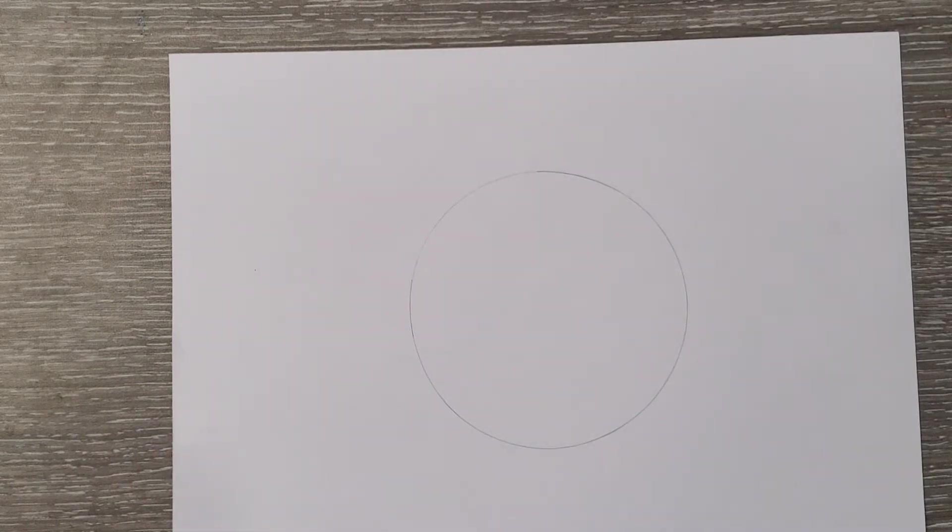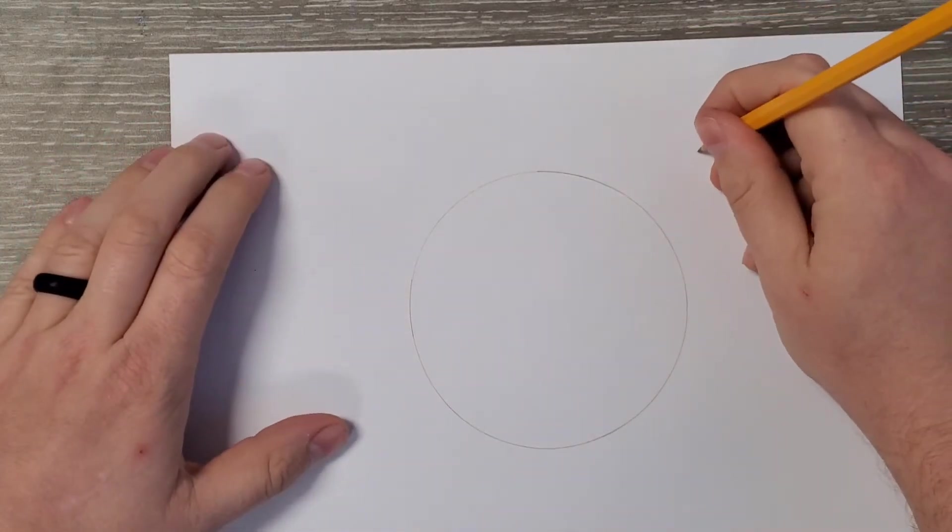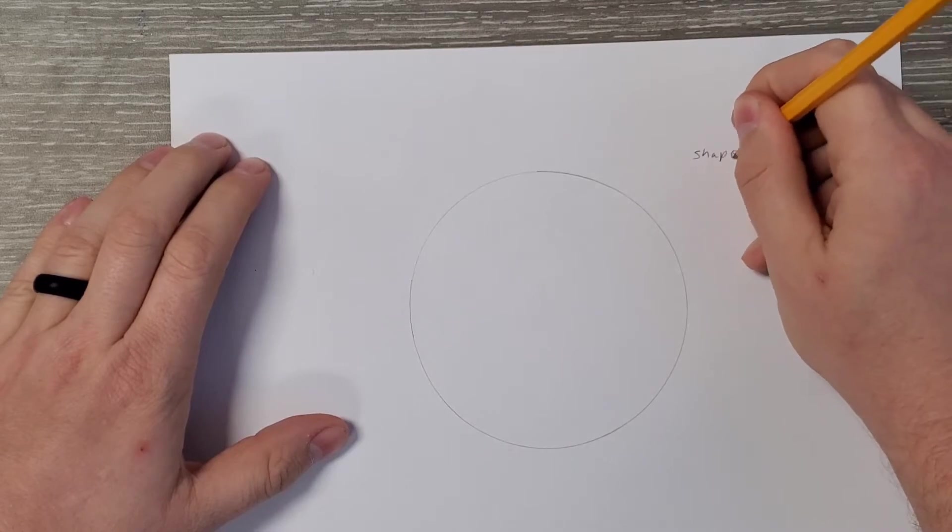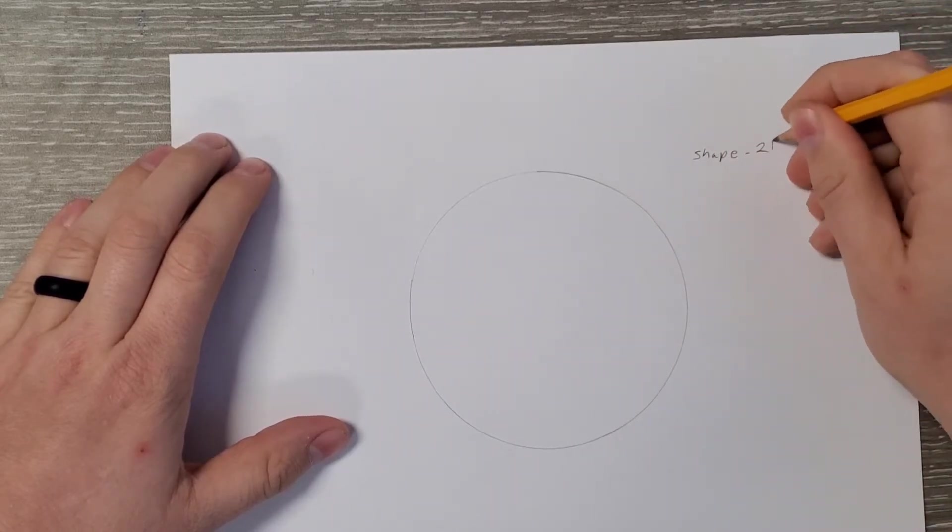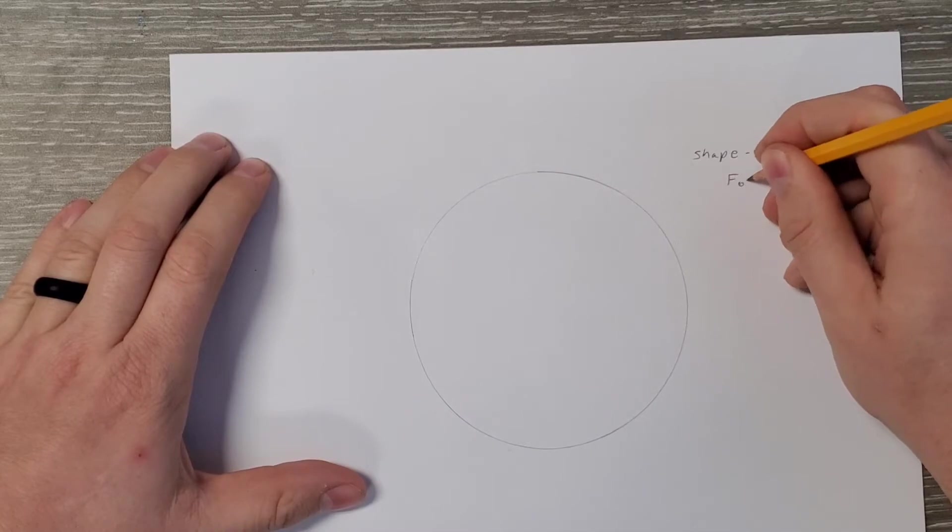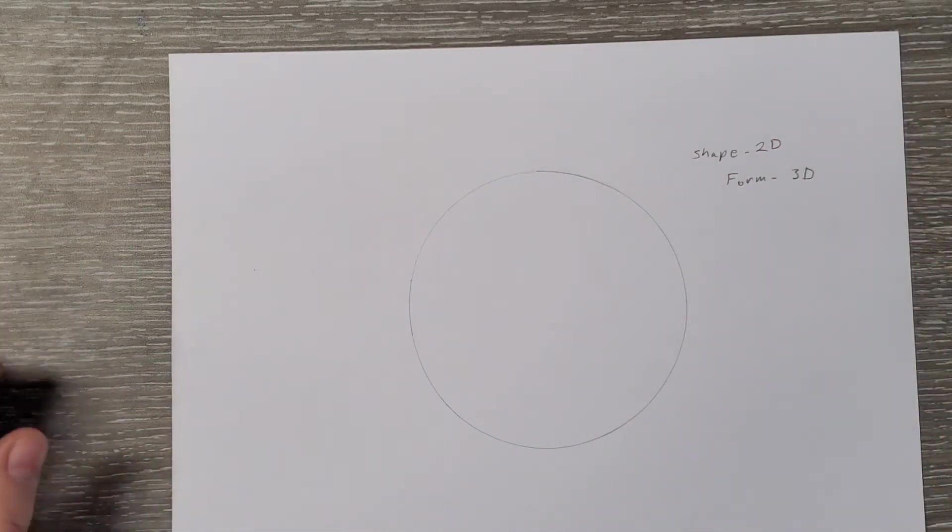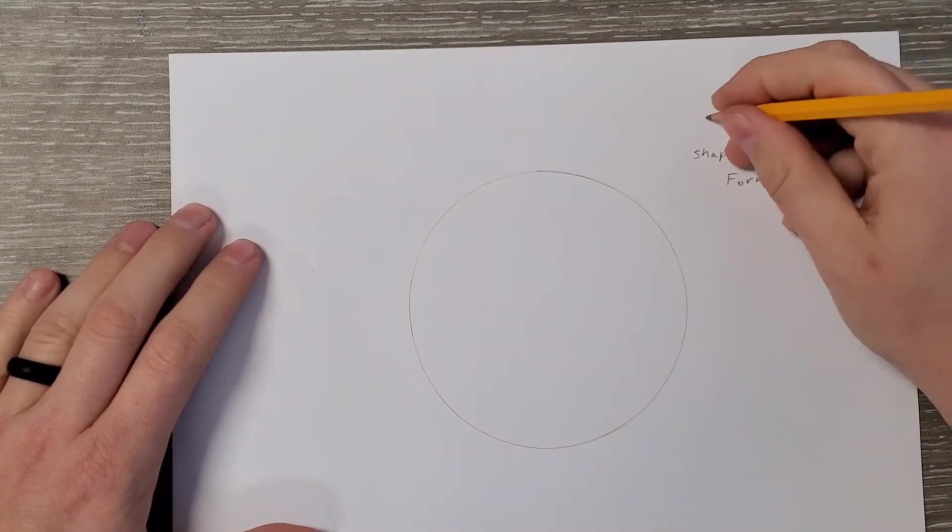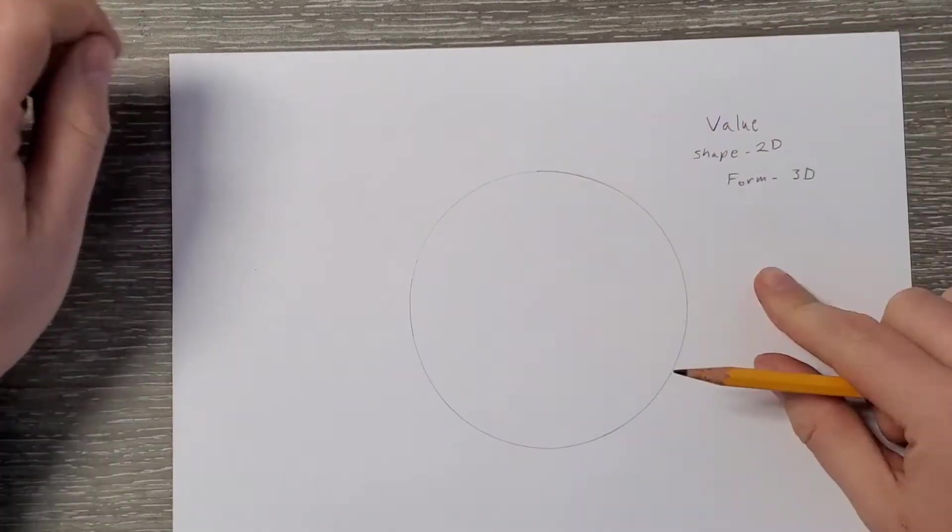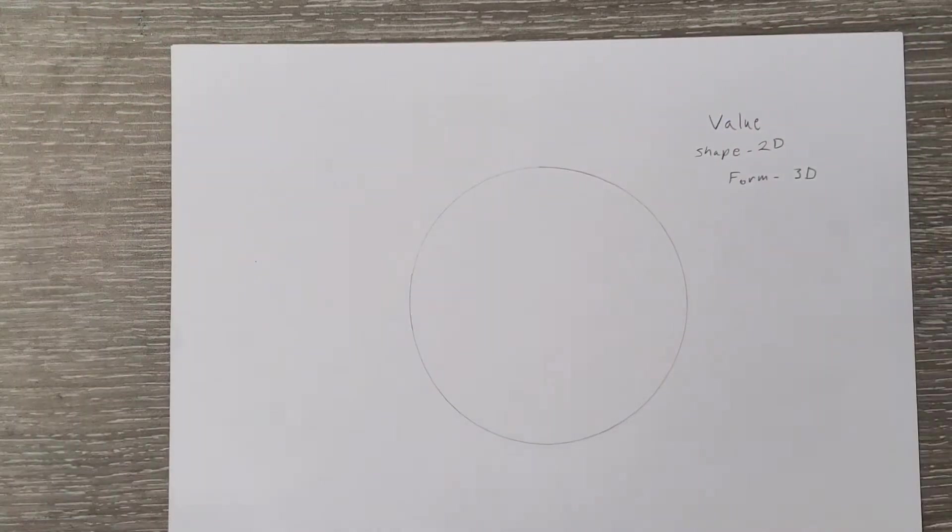Alright, and so right now it's a shape. It's flat, right? So this is a shape. But we're going to turn it into a form. Alright, and we're going to do it with value. Make it look like there's light, but it's not. We're all going to do this with just values with our pencil.